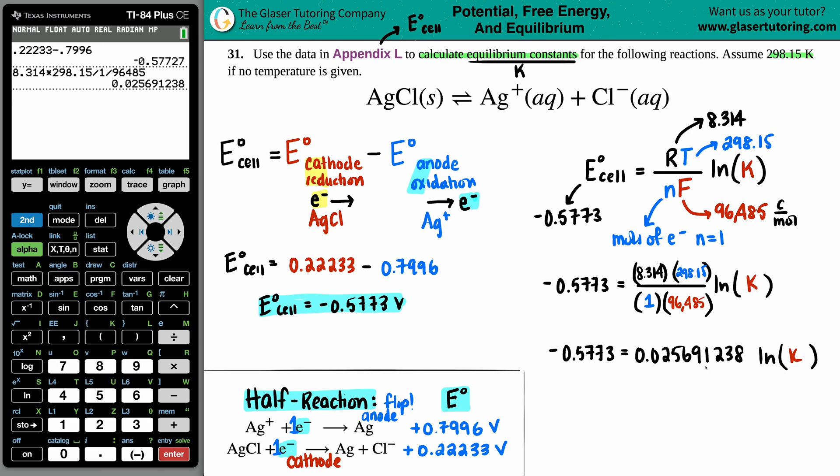Here. I want to get the K by itself. So I will divide by this crazy number on both sides. 0.025691238. So this goes bye-bye. Okay. And now I have negative 0.5773 divided by this value. Okay. Another number that I'm not going to round. So maybe I'll just put decimals here. Negative 22.47069, et cetera, et cetera. You get the hint, right? This equals the ln of K.